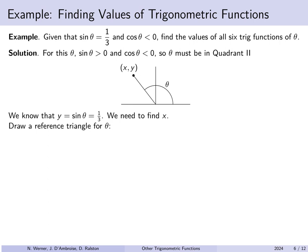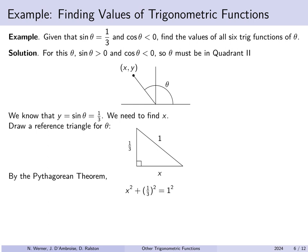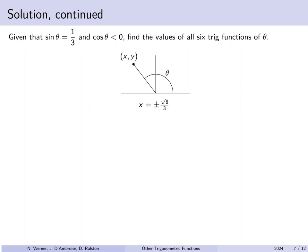Let's draw a reference triangle. We know that the height is positive 1/3, we're in the unit circle so the hypotenuse is 1, and x is what we're trying to find. By the Pythagorean theorem, x² + (1/3)² = 1², so x is plus or minus √8/3. One could simplify √8, but that's not our focus here. Since we already know we're in quadrant 2, we're going to use the negative value of x, so x equals −√8/3.